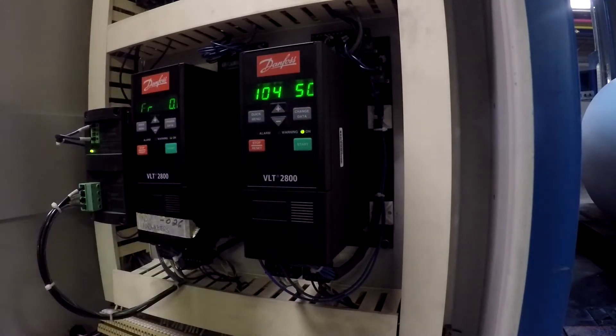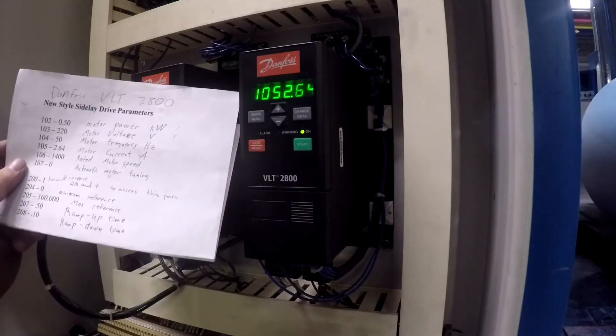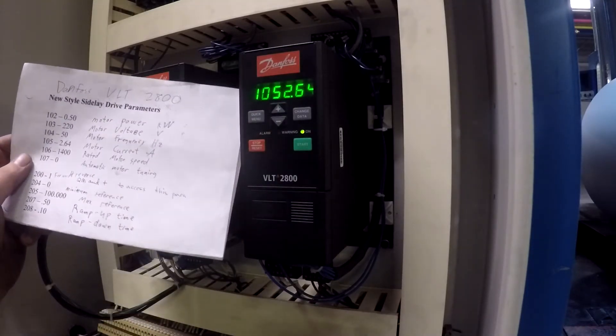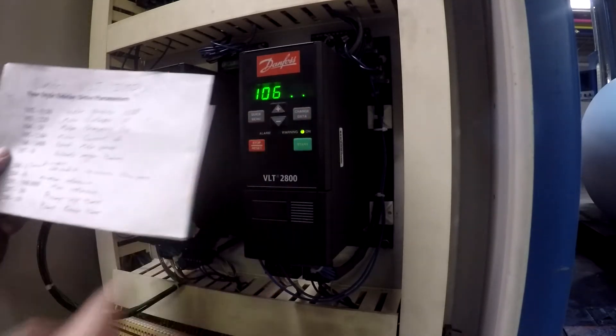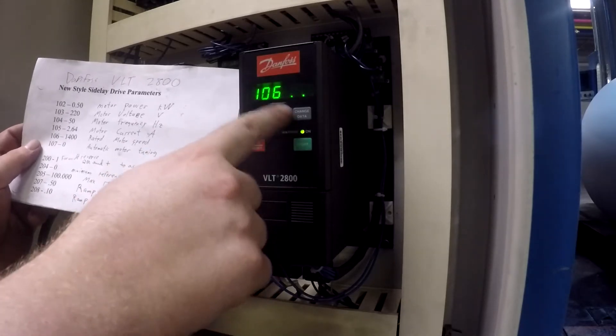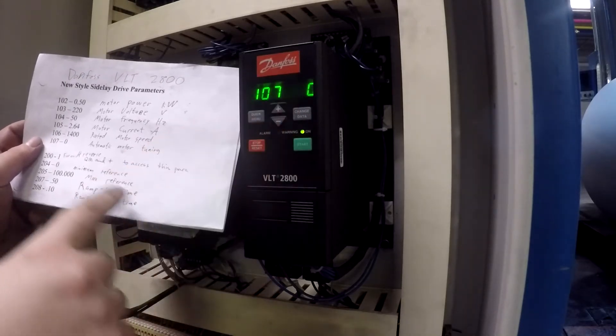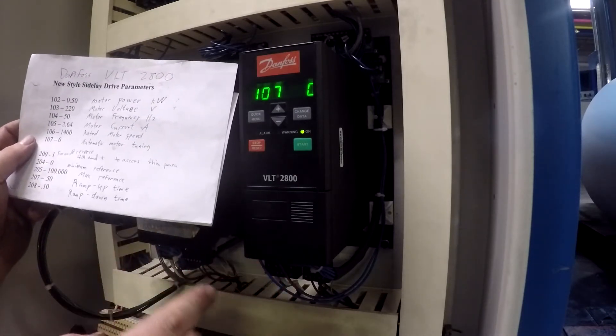104 needs to go to 50. 105 is 2.64, that one's already set and that is the motor current. Next is motor rated speed, 106, and that is 1400. 107 automatic motor tuning, we want that off. That's all the quick menu stuff that we can do.